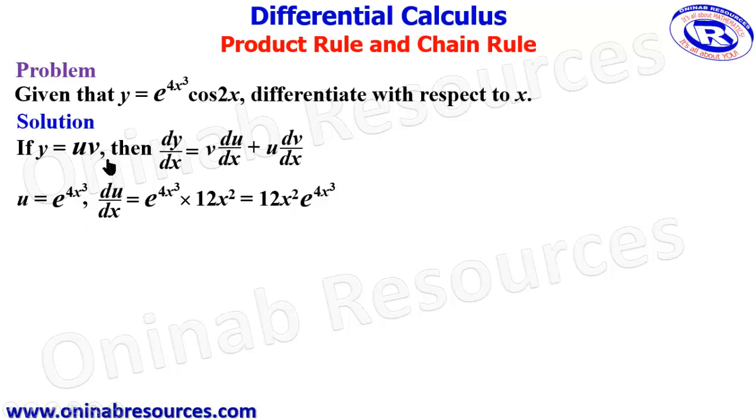Then we go for our v. We have our v to be cos 2x, then dv/dx now is, we differentiate cos normally, we put our 2x. That's going to give us negative sine 2x, then we now differentiate this 2x and multiply by negative sine 2x. So we now say multiply by 2 because the derivative of 2x is 2. And then simplifying for that we have negative 2 sine 2x.